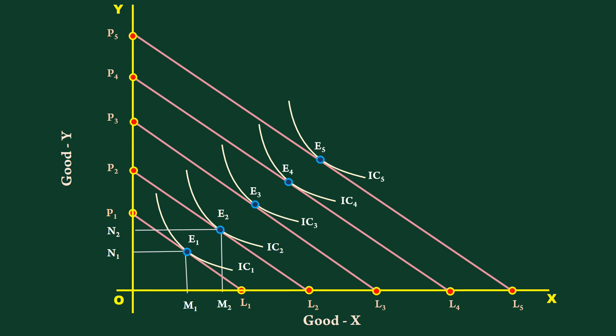As income level increases, he increases his purchase of good X to M3, M4, M5 and good Y to N3, N4, N5. The smooth curve that joins all the equilibrium points is income consumption curve.